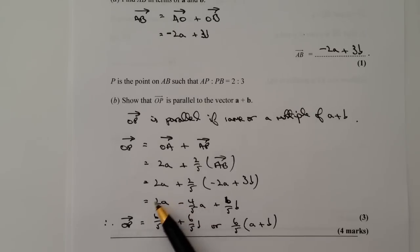But what we've shown is demonstrated that because vector OP is a multiple of a plus b, it's a multiple by six fifths, then it must be parallel.